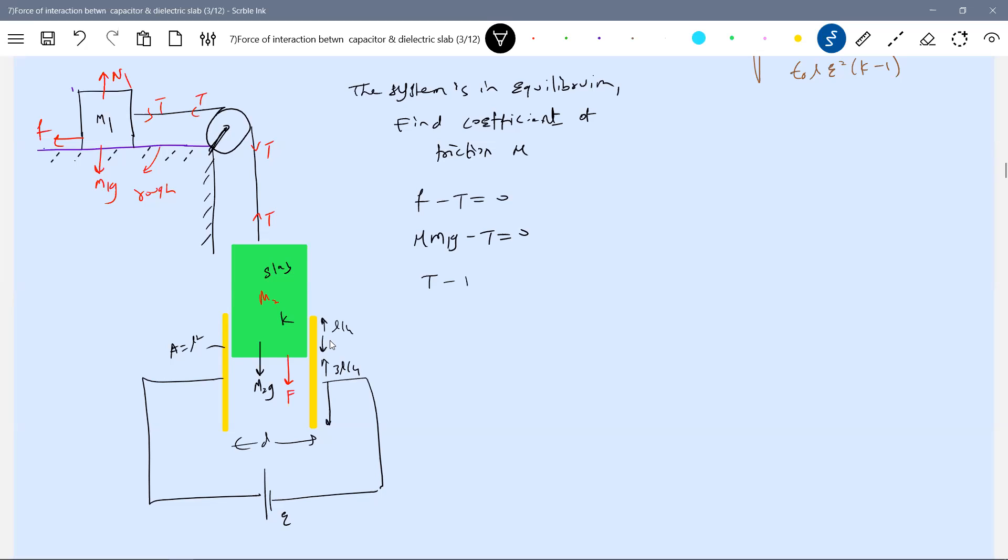t minus m2g minus f equal to 0. t is equal to mu m1g. This is m2g. What is f? f equals epsilon-0 l E-square (k minus 1) by 2d.